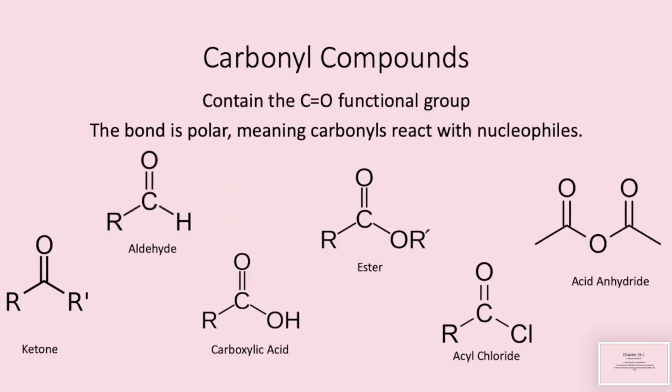Carbonyl compounds contain the C double bond O functional group. This bond is polar, meaning that carbonyls react with nucleophiles. You should remember from earlier chapters that nucleophiles are electron donators. There are lots of different carbonyl groups — for example, ketones, aldehydes, carboxylic acids, esters, acyl chlorides, and acid anhydrides. Don't worry, you'll be meeting these as we go through chapter 26.